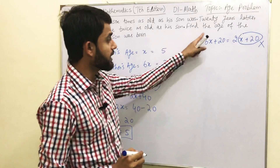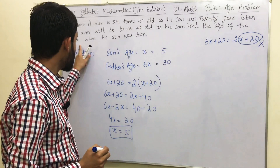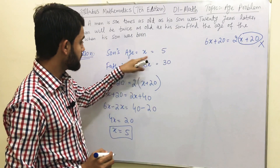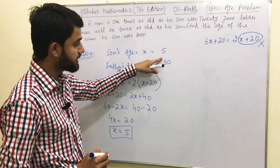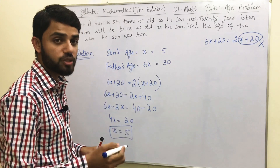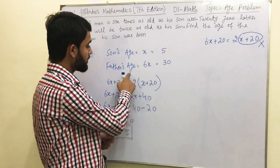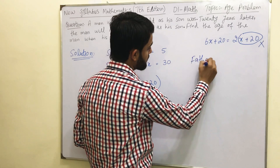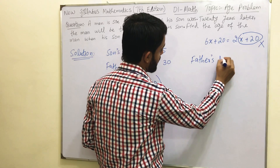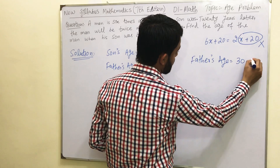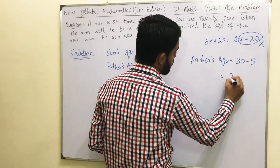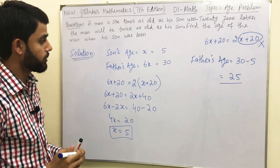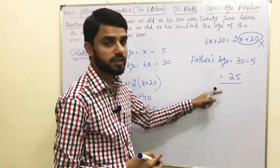The age of the son is 5 and the father's current age is 6 × 5 = 30. The question asks for the age of the man when his son was born. So the father's age at that time is 30 − 5 = 25. The age of the father when his son was born is 25.